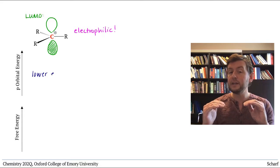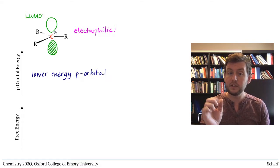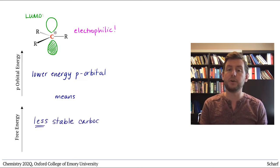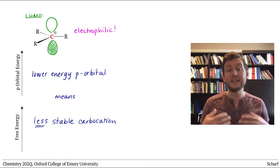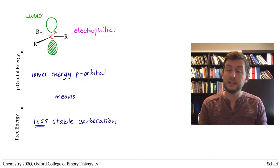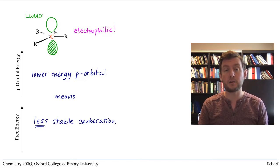The lower in energy that P orbital, the hungrier it is for electrons, the less stable the carbocation. So anything that provides even the tiniest bit of electron density to that empty P orbital helps to stabilize the carbocation.